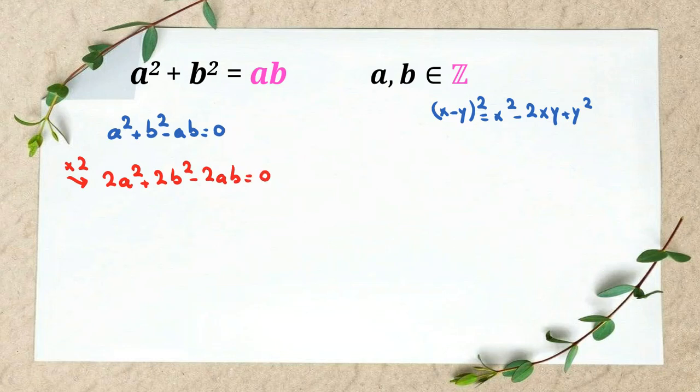In the next step, I try to rearrange this: a² + b² + a² + b² - 2ab = 0. Now we can say that in the next step: a² + b² + (a - b)² = 0.